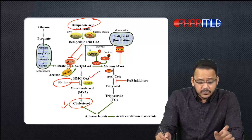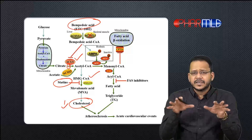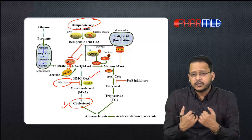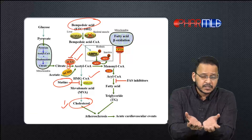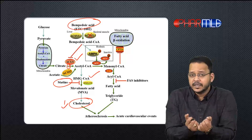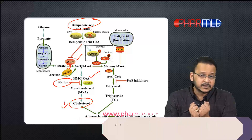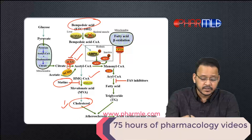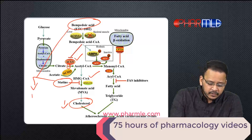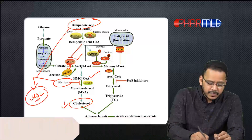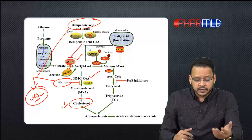Both statins as well as bempedoic acid can block cholesterol synthesis. Whenever there is a decrease in cholesterol, cells rely upon the LDL present in plasma — they take up that LDL and break it down into cholesterol. So cells increase their uptake of LDL from plasma, and that is how plasma LDL decreases. At the end of the day, both statins and bempedoic acid result in a decrease in plasma LDL.